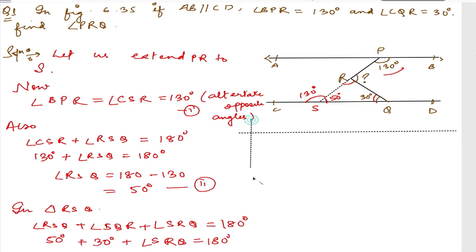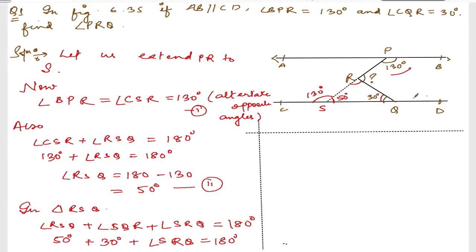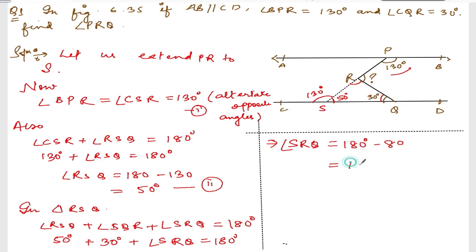So angle SRQ equals 180° minus (50° plus 30°), which is 180° minus 80°, giving us angle SRQ equal to 100°. Let us call this equation number 3.